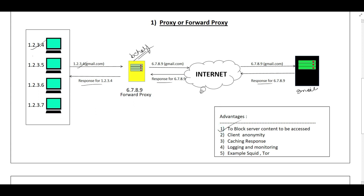The benefits of using a forward proxy are: first, we can block certain content from being accessed — for example, in a corporate or school environment, we can control what is and isn't accessible. Second, client anonymity is maintained — the client IPs like 1.2.3.4 are not revealed to the server; only the forward proxy IP is revealed. Third, we can cache responses so content can be returned directly from the proxy. We can also do logging and monitoring of all traffic from client machines. Examples of forward proxies are Squid and Tor.